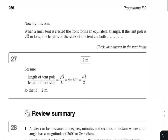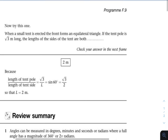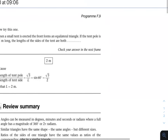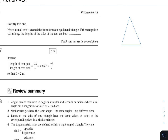Let's try this one. When a small tent is erected, the front forms an equilateral triangle. If the tent pole is the square root of 3 meters long — the tent pole being this middle pole here — we need to find the length of the sides of the tent.